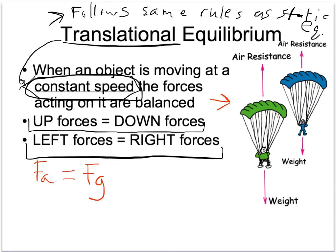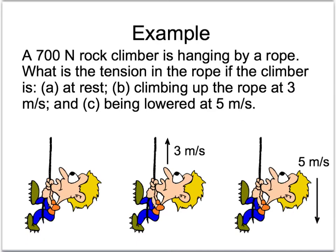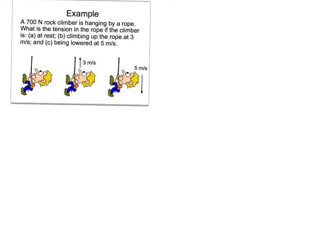I have an example next, it'll be super simple. Example. A 700-Newton rock climber is hanging by a rope. What is the tension in the rope if the climber is A, at rest, B, climbing up the rope at 3 meters per second, and C, being lowered at 5 meters per second? Okay, so let's consider the situation. The climber is hanging by a rope, what is his tension if he's at rest? Well, if he's at rest, that's static equilibrium.